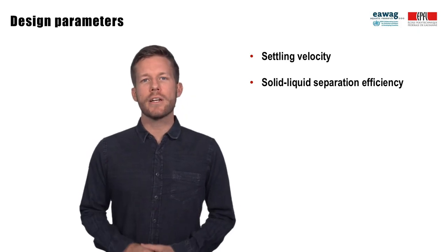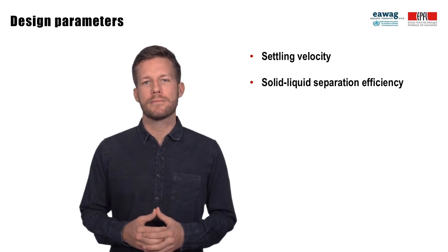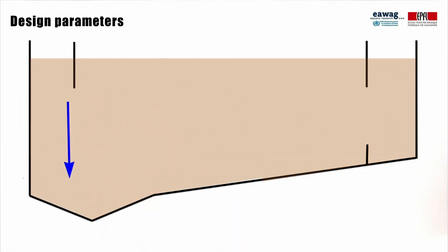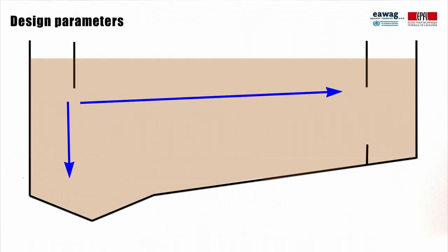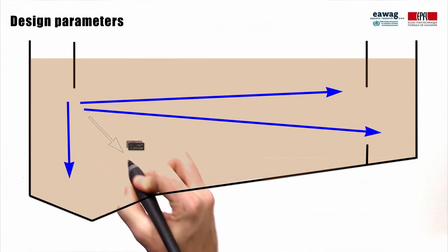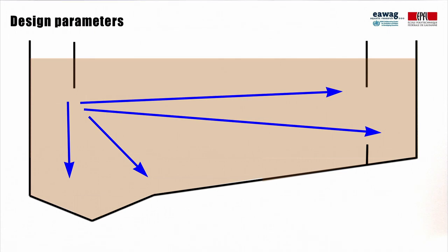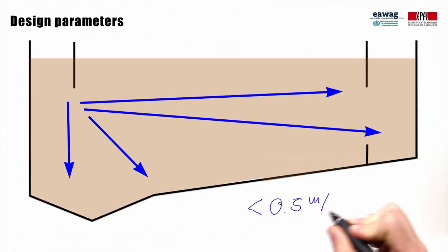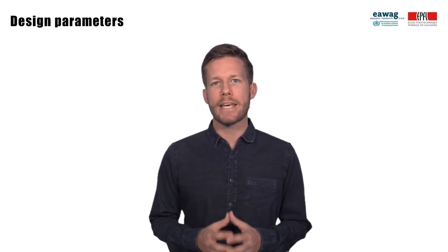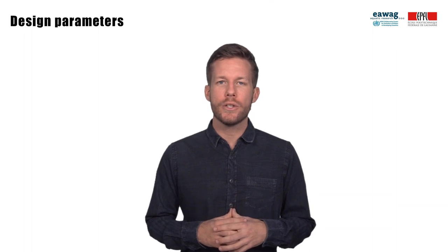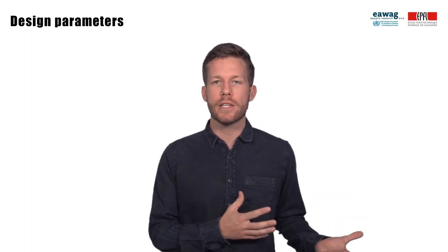The settling velocity and the solid-liquid separation efficiency are design parameters specific to settling thickening tanks. The settling velocity is an estimate of the speed at which solids settle to the bottom of a settling thickening tank. If the speed with which the solids travel through the tank is faster than the settling velocity, the sludge will leave the tank with the effluent. If the settling velocity is faster than the velocity with which solids travel through the tank, the solids will settle out at the bottom. Based on experience from Accra, Kampala, and Dakar, a settling velocity of equal to or smaller than 0.5 meters per second seems appropriate for fecal sludge in settling thickening tanks. However, experience is lacking on appropriate design values for settling velocity of fecal sludge due to the wide range of fecal sludge characteristics from different on-site sanitation technologies or cities.